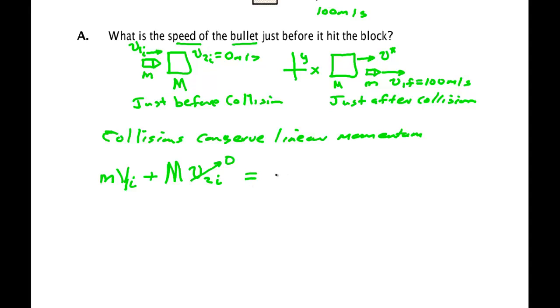And afterwards I have a bullet traveling at V1F and I have a block traveling at V star. And I'm looking for V1I, the initial velocity of the bullet, which is dividing both sides by little m, the final velocity of the bullet plus the mass of the block divided by the mass of the bullet times V star.